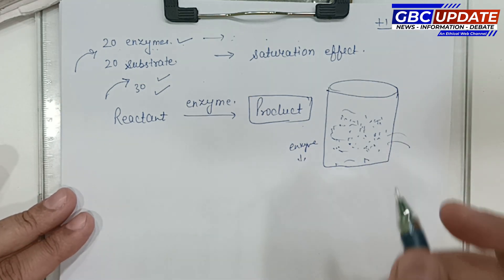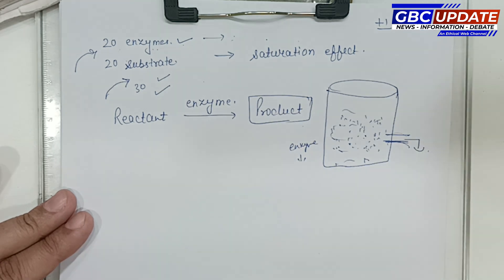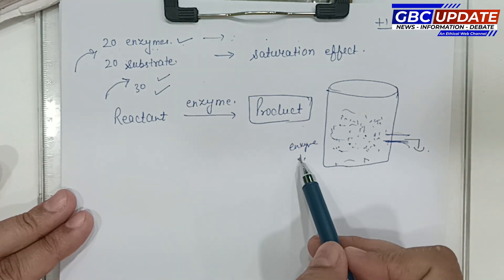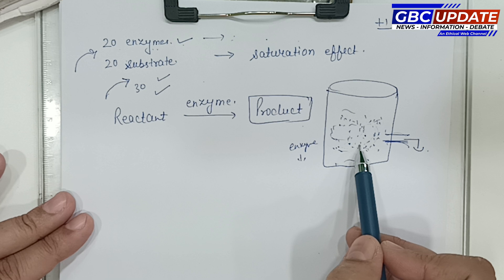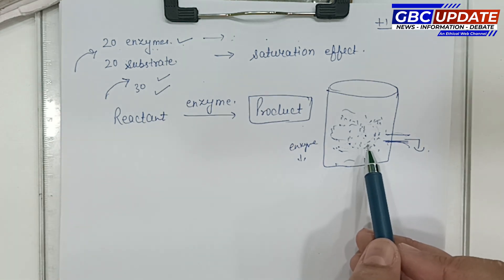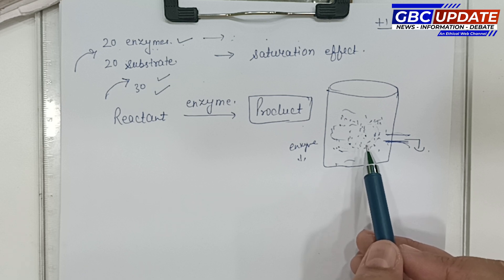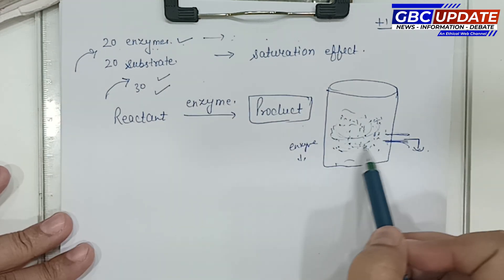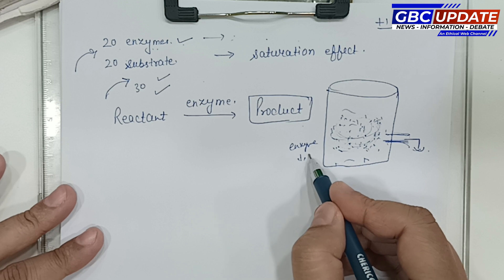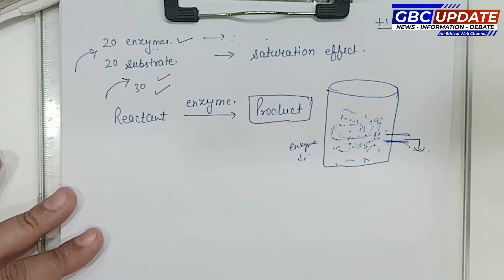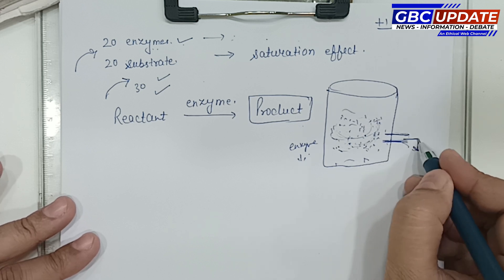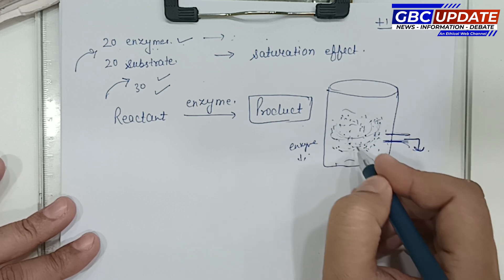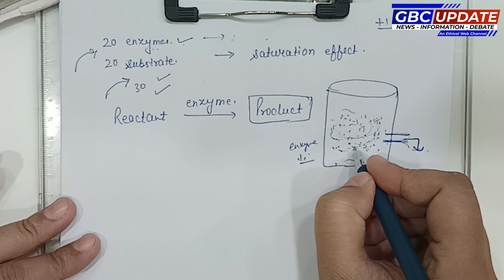However, if the product is removed from outside the reaction vessel, there is no accumulation, and enzymatic activity will continue normally. So if the product is removed, enzymatic activity is maintained; if it accumulates, activity reduces.